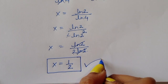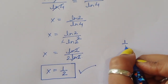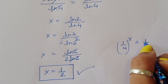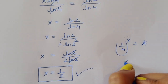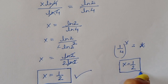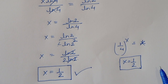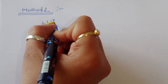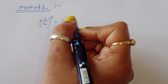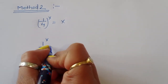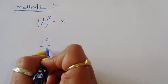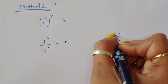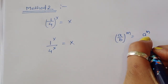This is the correct solution from method 1: x = 1/2. So (1/4)^x = 1/2 when x = 1/2. This was the first method. Now we are solving the same equation using a second method, starting again from (1/4)^x = x.